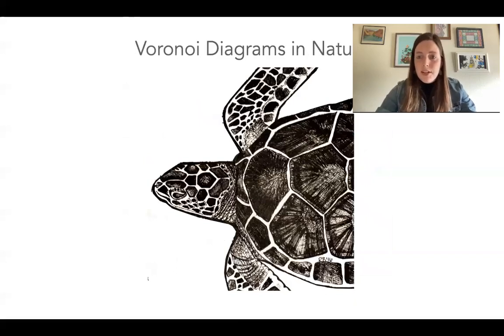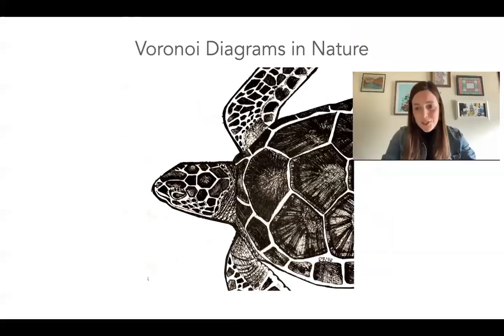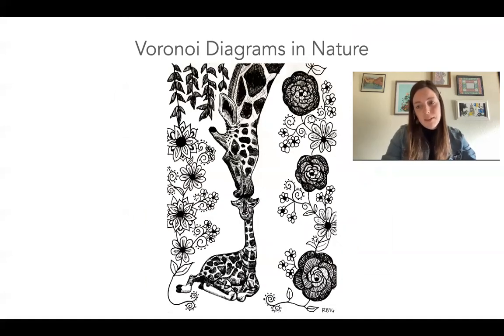So Voronoi diagrams also show up in nature a lot. They can be used to model animal patterns. For example, if we look at a sea turtle, this pattern could be modeled by a Voronoi diagram. And same thing goes with giraffes and the spots on the giraffe. It looks like a Voronoi diagram.